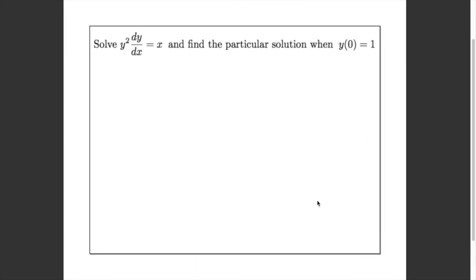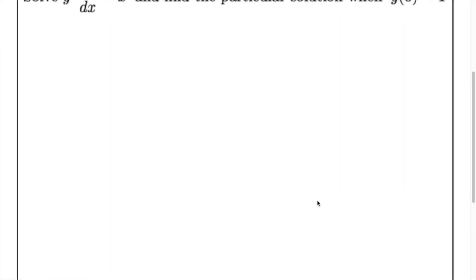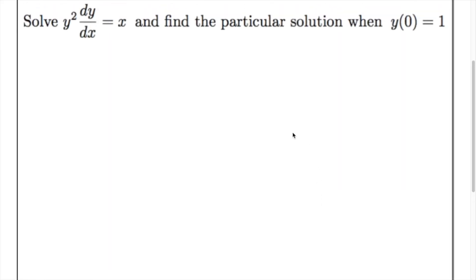I'm going to give you another one to try on your own. Given y squared times dy/dx equals x — again, not simple because it has both x's and y's. Use the strategy of separation of variables to find the particular solution through the point (0, 1). Press pause, try it on your own first, then I'll show my solution.